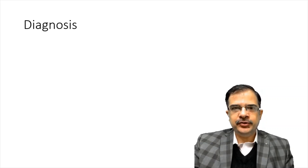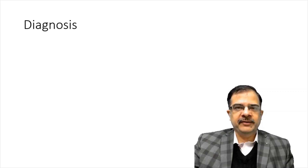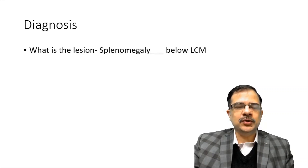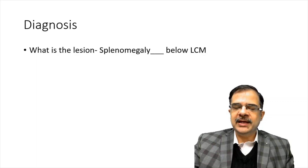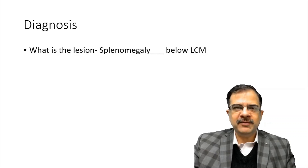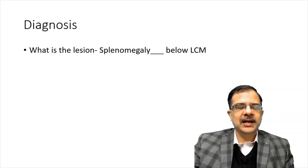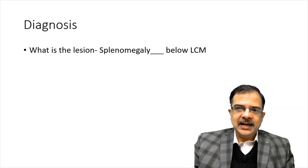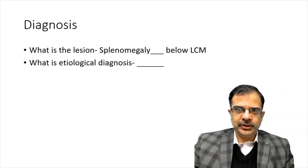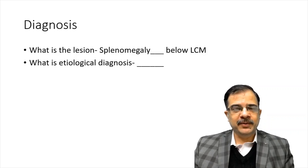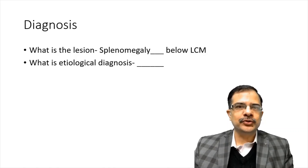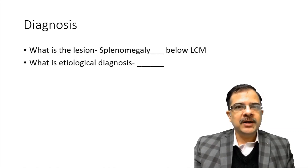Now, the diagnosis. Based on the clinical history and examination, we should go systematically. We will not straight away say it is a case of kala-azar or portal hypertension. The first point in the diagnosis is always: what is the lesion? So we will say splenomegaly is present, or a mass in the left upper quadrant is present, and it is say 10 centimeter or 8 centimeter below the left costal margin. Then the next point will be the etiological diagnosis — we can tell the differential diagnosis based on our examination findings.